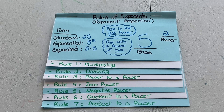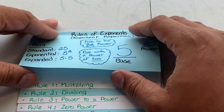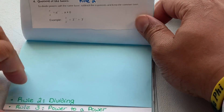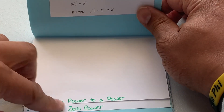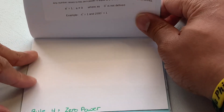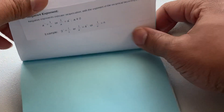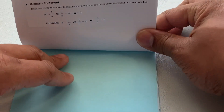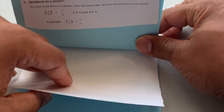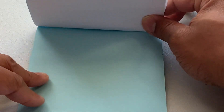Let's review what we just did. You were supposed to cut out and paste in the notes from the printout; if you didn't have the printout, write them in. Rule number one was product of like bases. Rule number two is quotient of like bases. Power to a power goes in rule three. Zero exponent goes with zero power. Negative exponent goes with negative power. Quotient to a power goes with quotient to a power. Product to a power goes with product to a power.